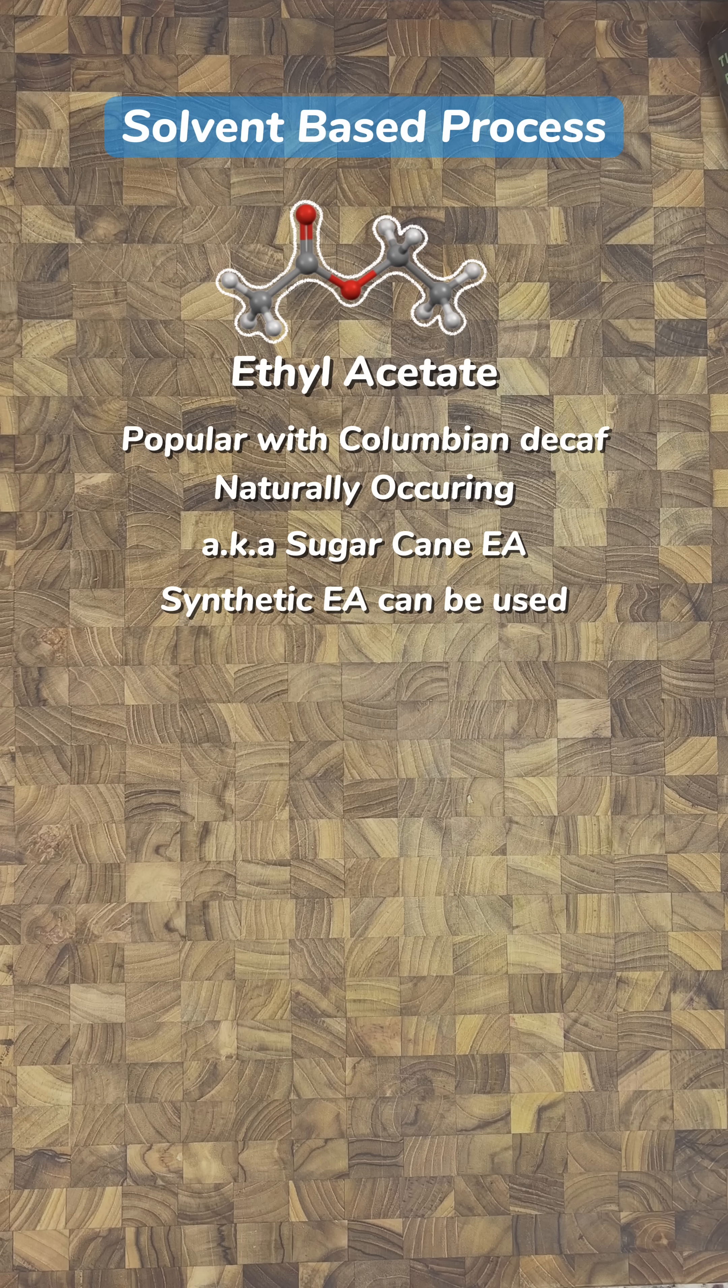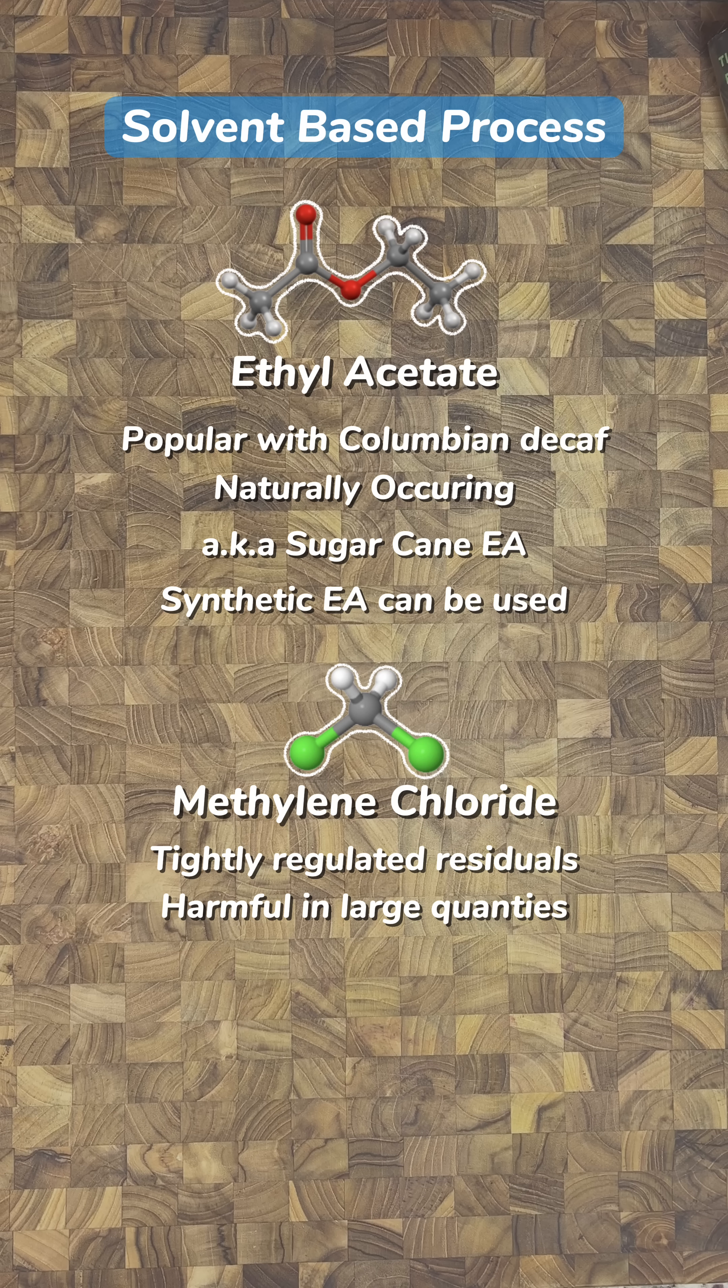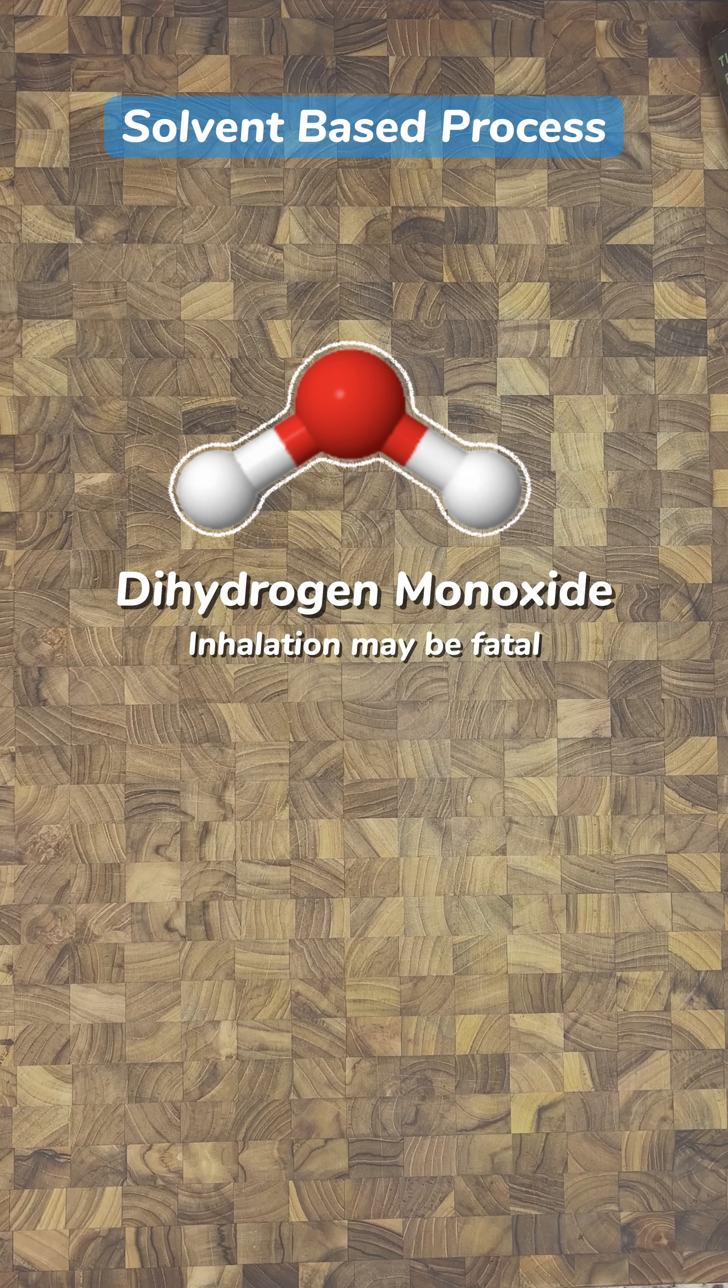The solvent is either ethyl acetate, which is naturally occurring in fermenting fruits and sugars, or methylene chloride. Don't fear the word solvent or chemical. Dihydrogen monoxide is a scary-sounding chemical and a solvent as well.